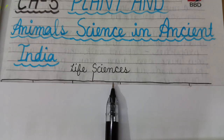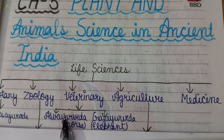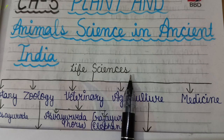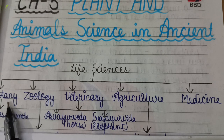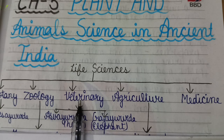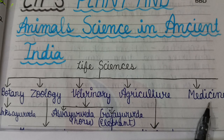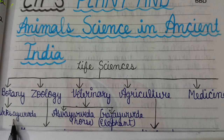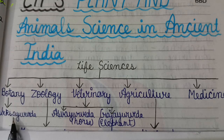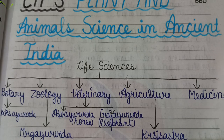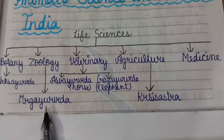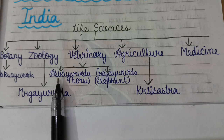First, we categorize Life Science into Botany, Zoology, Veterinary, Agriculture, and Medicine. Botany is also known as Vriksha Ayurveda - Vriksha means plants. Zoology is known as Mriga Ayurveda - Mriga means animals.